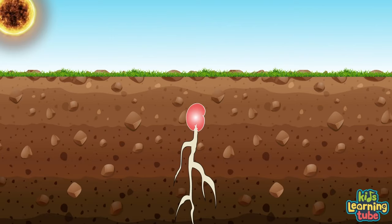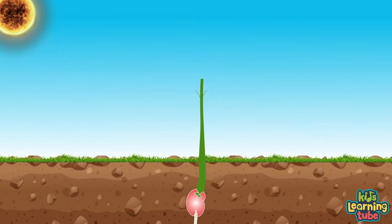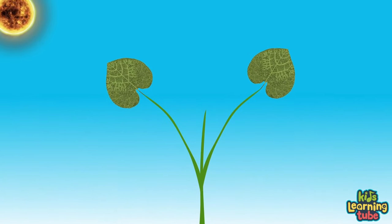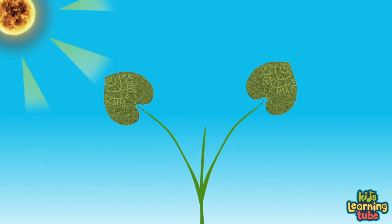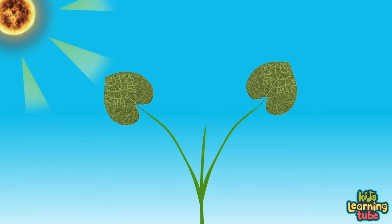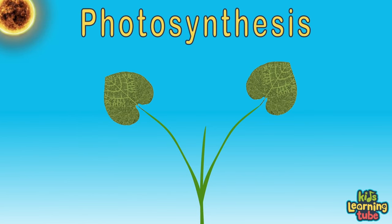When the roots are deep enough, a shoot breaks out the other side, reaching up to send its new leaves towards the sky. This new sprout doesn't need to feed off the endosperm anymore, because now it can create its own food from sunlight. This process of creating food is called photosynthesis.